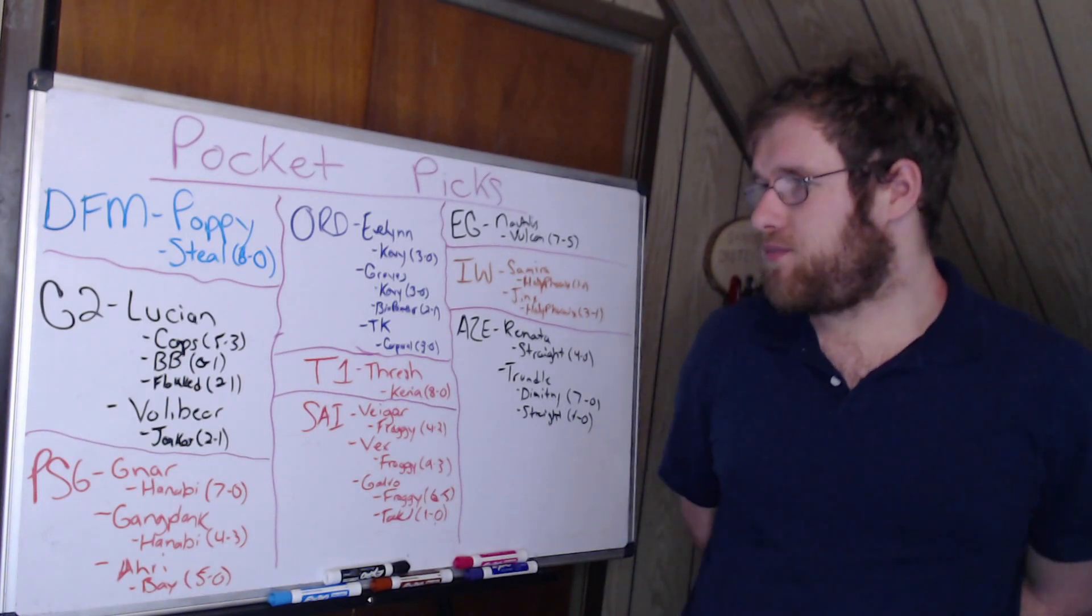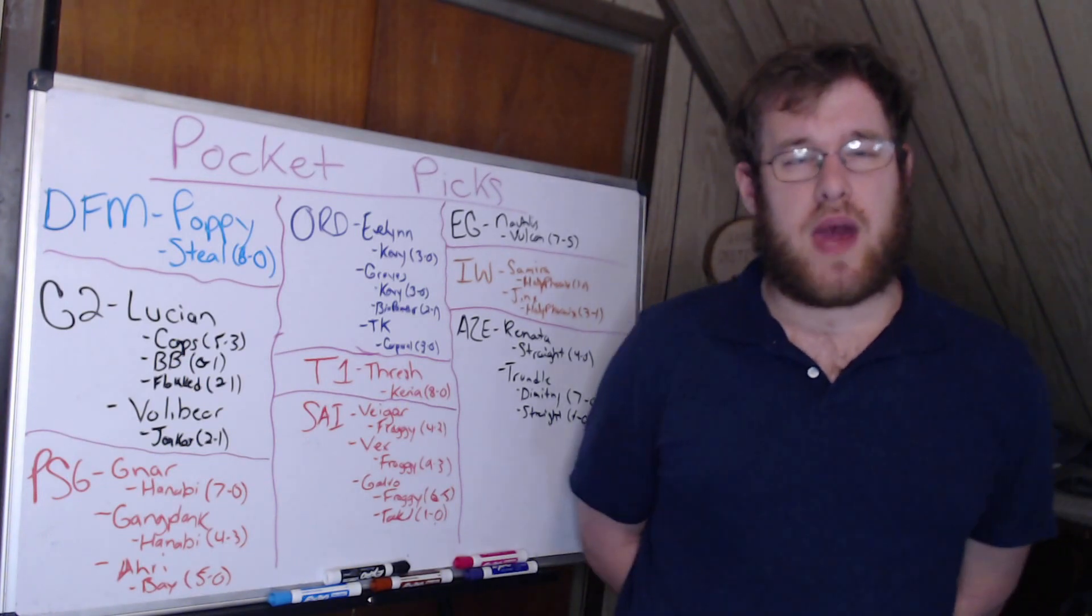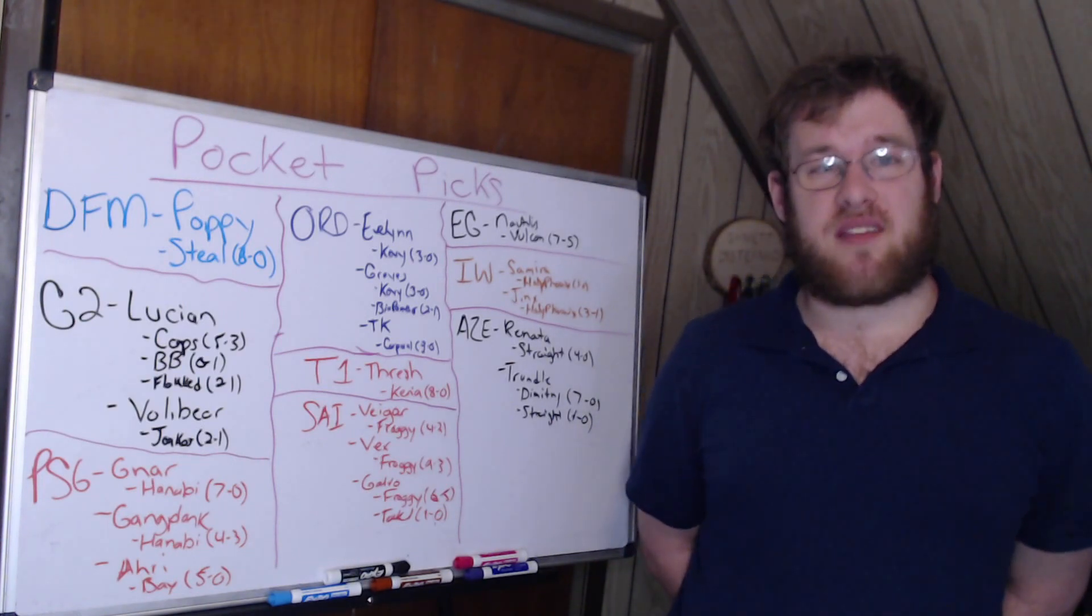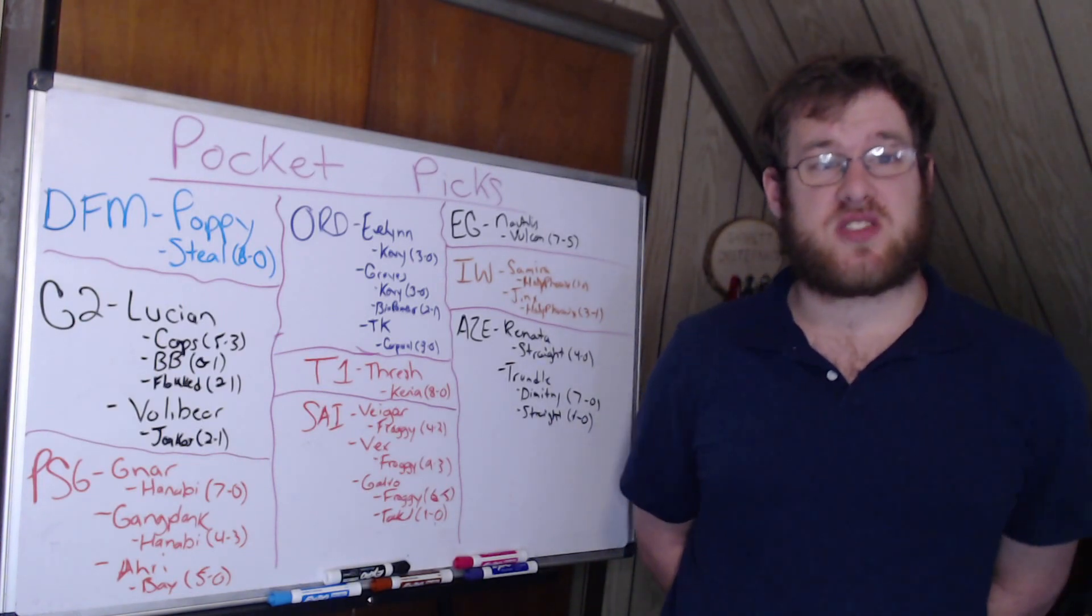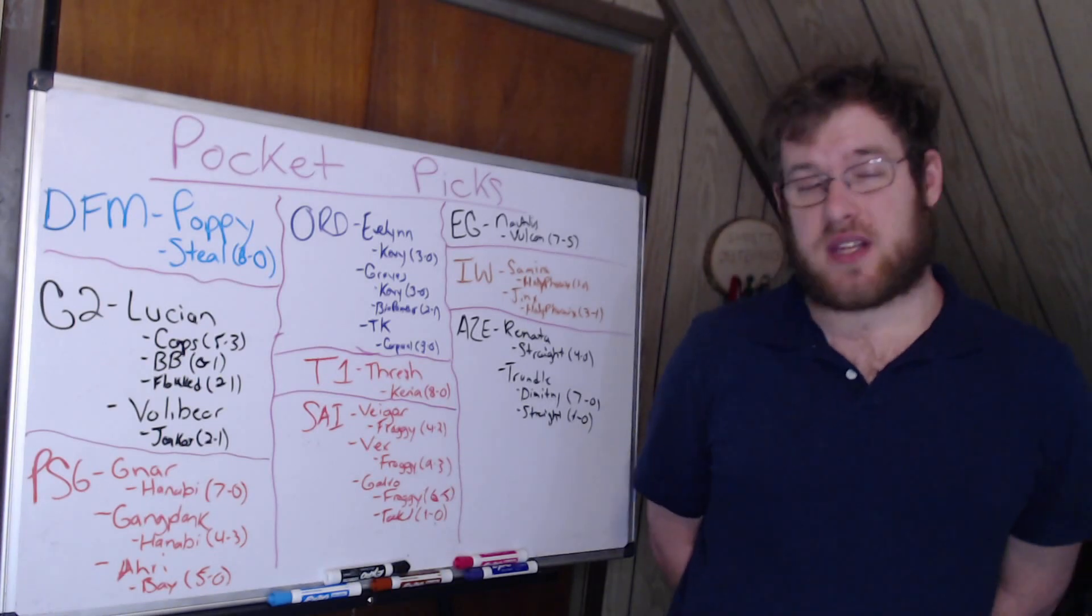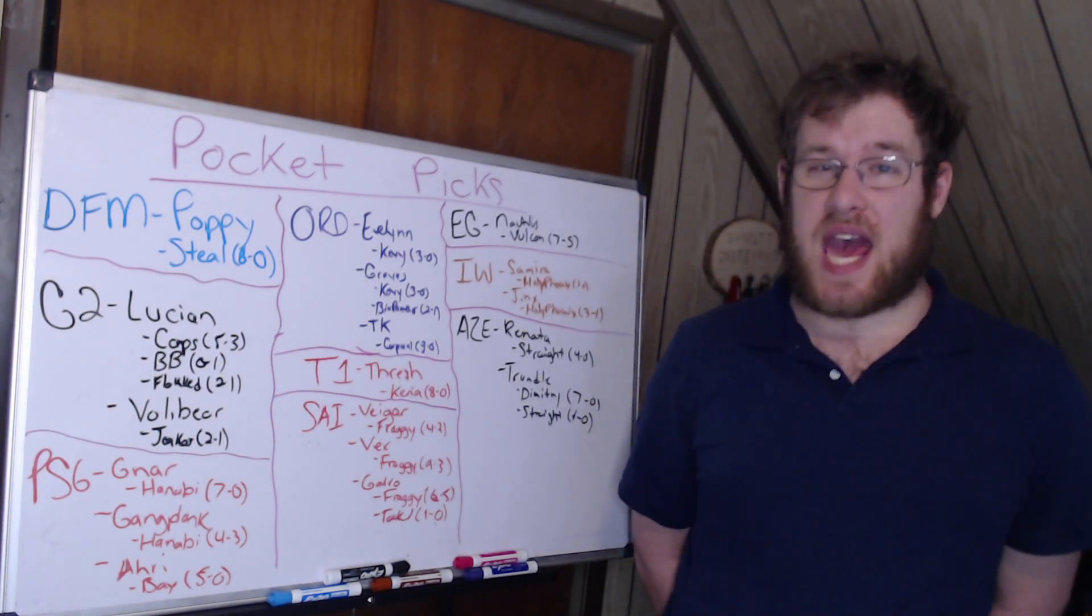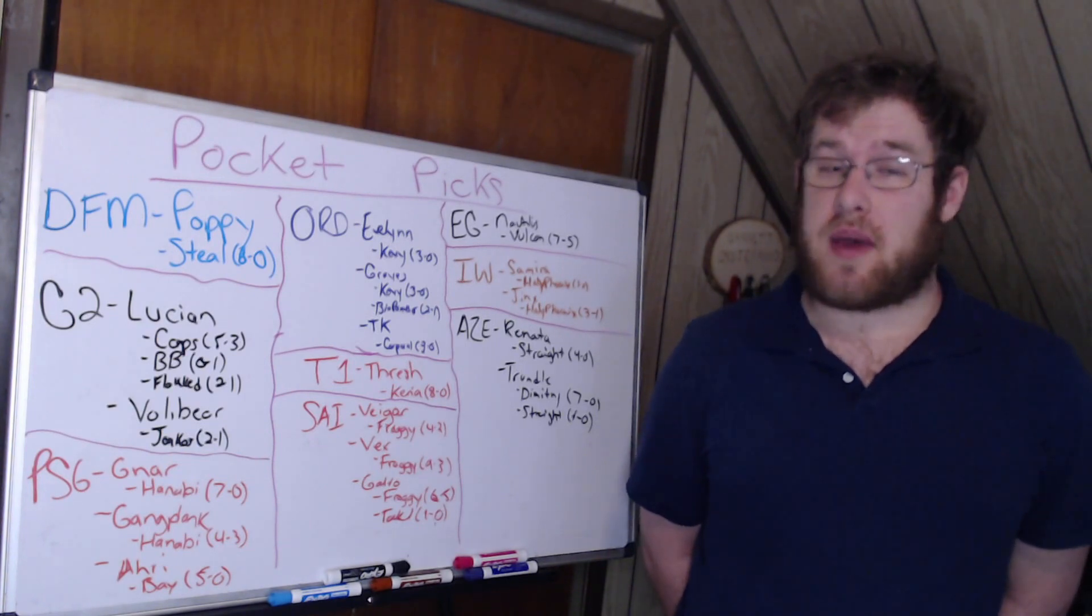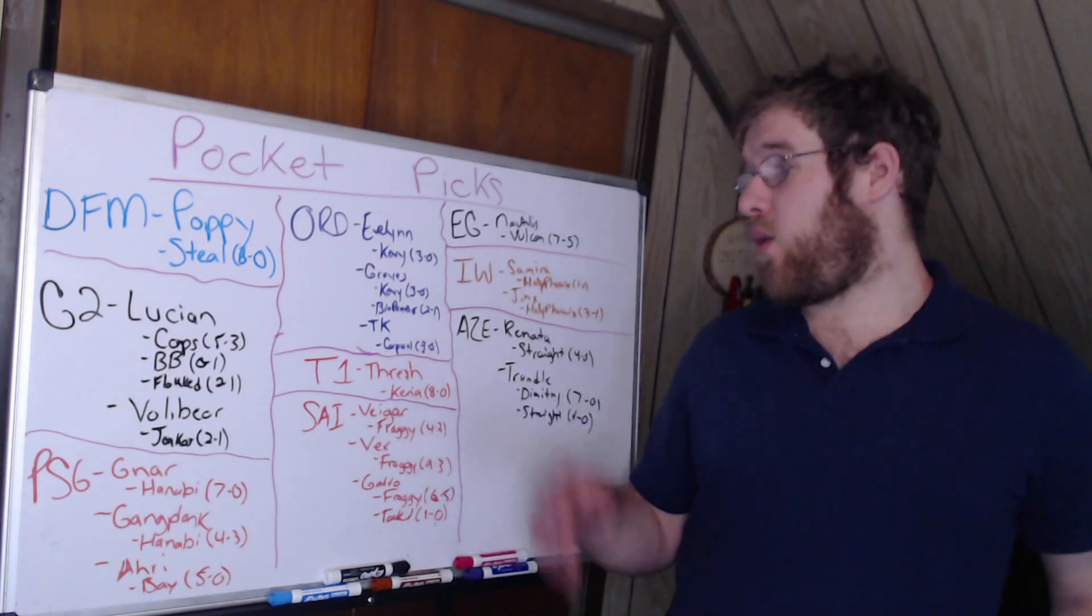Order had an interesting champion banned a lot: Evelynn. Kevy plays a lot of Evelynn, apparently. His Evelynn is disgusting. He went 3-0 on Evelynn this year. Kevy, I have, is probably the player to watch on Order. I think that he's really, really good. He did very well on the Graves; he also went 3-0 on that.